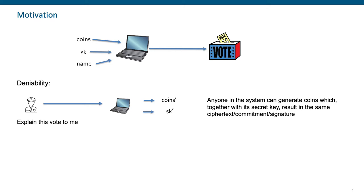By explaining, we mean to show his secret key and the coins used to generate this vote. Unfortunately, if we don't have the property of deniability, this might lead to some issues. By deniability, we mean that everyone in the system can explain this vote by generating random coins that will lead to the same value — whether that value is a ciphertext, a commitment scheme, or even a signature. The other thing we want is for the user to also not be able to claim a vote to get money from the state adversary, so the user shouldn't be able to give an undeniable proof that he really created that given vote.